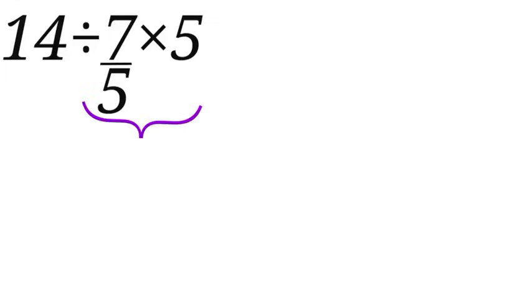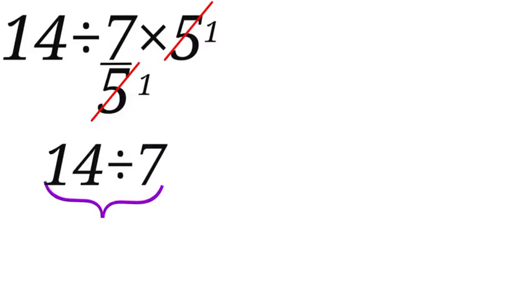First, let us address this 7 over 5 times 5. 5 divided by 5 is 1, and 5 divided by 5 is 1. So we are left with 14 divided by 7. 14 divided by 7 is 2. As convincing as that may sound, this is not correct. It is wrong.